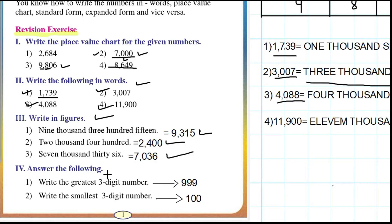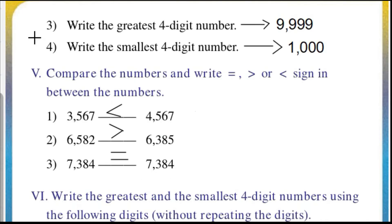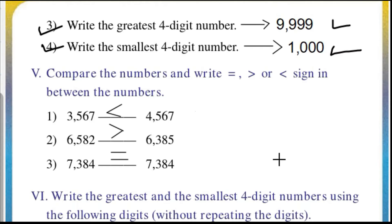Fourth main: answer the following. Write the greatest three-digit number — that is 999. Write the smallest three-digit number — that is 100. Write the greatest four-digit number — that is 9999. Write the smallest four-digit number — that is 1000.